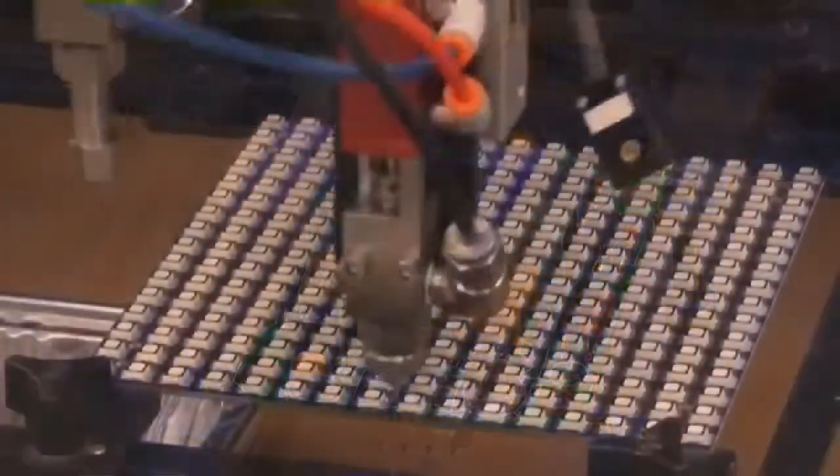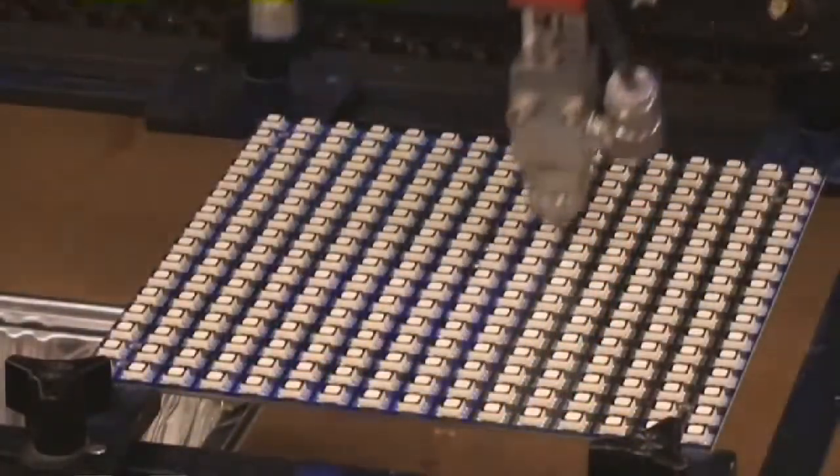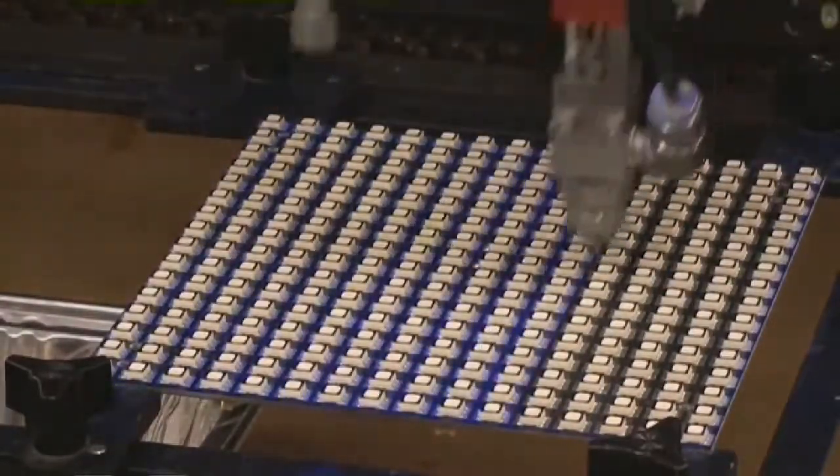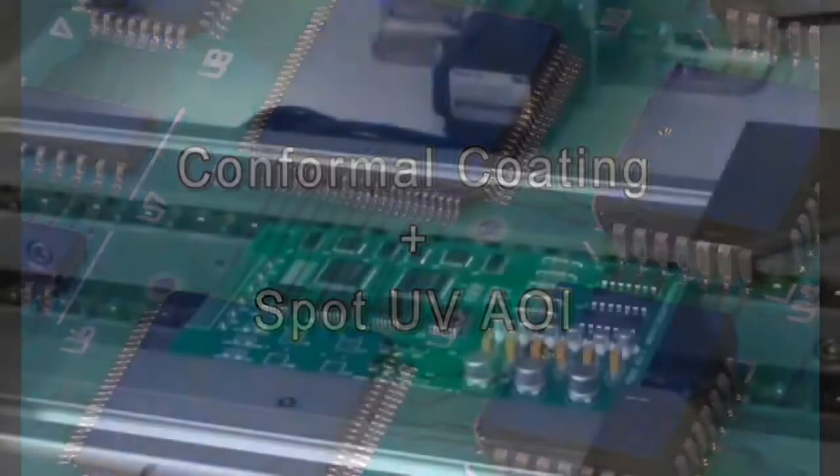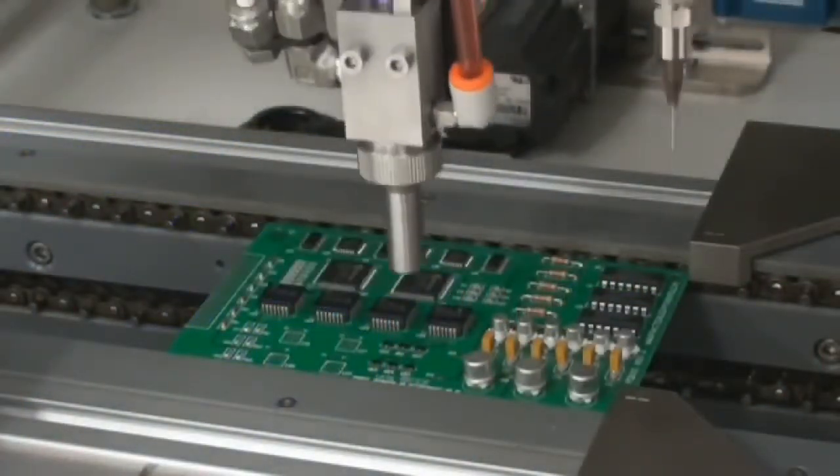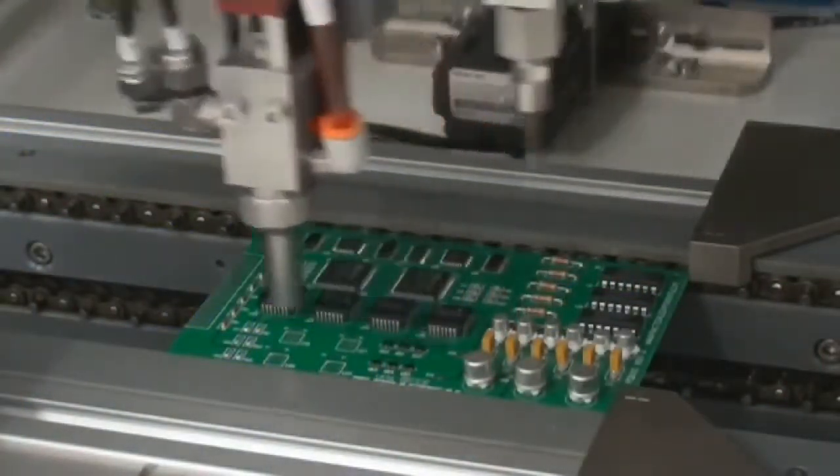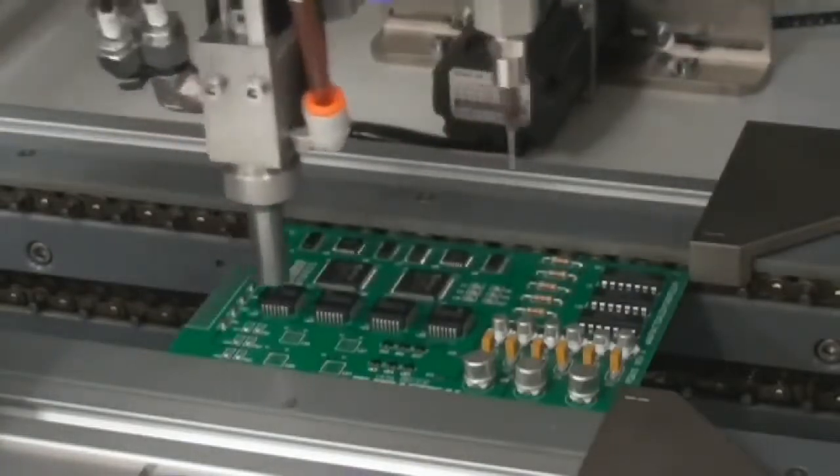These materials typically contain an efflorescent dye to aid in coating coverage inspection while having their own specific physical and chemical properties. At ICA, we apply four classes of conformal coatings: acrylic, urethane, silicone, and varnish.